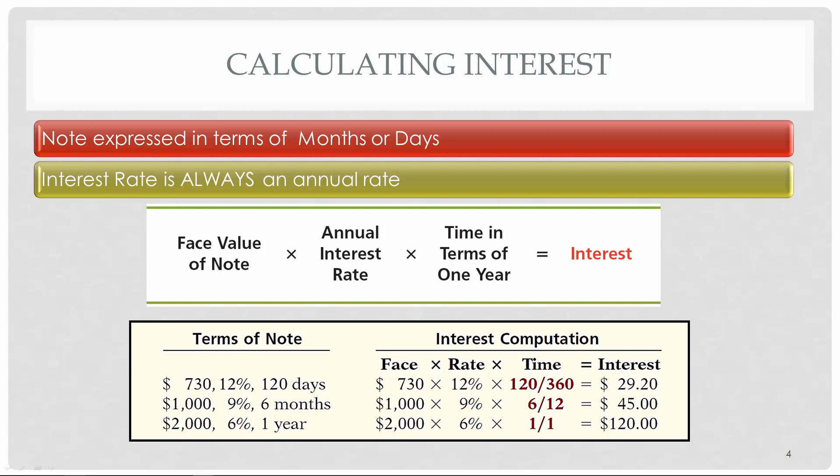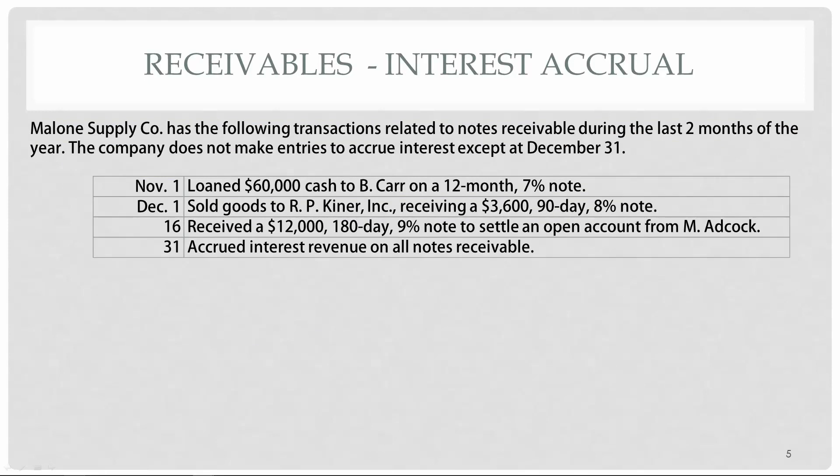Let's look at Malone Supply Company, which has the following transactions for the last two months of the year, and we need to record the interest on December 31 for all notes. On November 1 they loaned $60,000 cash to BCAR on a 12-month, 7% note. On December 1 they sold goods to RP Kenner and received a $3,600, 90-day, 8% note. On December 16 they received a $12,000, 180-day, 9% note to settle an open account.